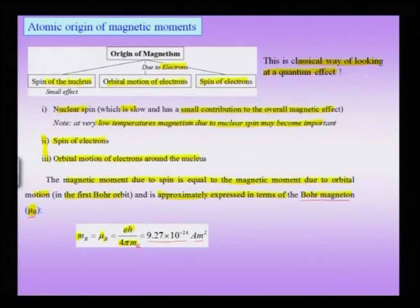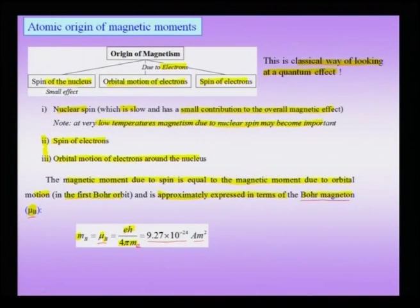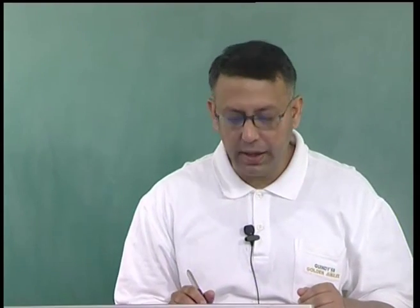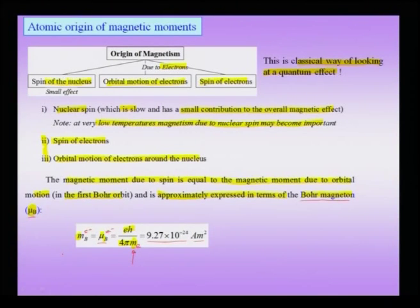The Bohr magneton is one of the fundamental constants of nature — analogous to charge in the case of the electron. Since mass appears in the denominator of the Bohr magneton formula, replacing the electron mass with the much larger nuclear mass makes the nuclear magnetic moment very small. This is why we can safely ignore nuclear spin effects in most of the phenomena we discuss.